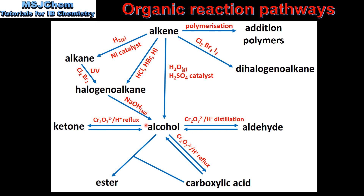A secondary alcohol can be oxidized using acidified potassium dichromate and reflux to form a ketone. Next we look at the reduction reactions of aldehydes, ketones, and carboxylic acids.